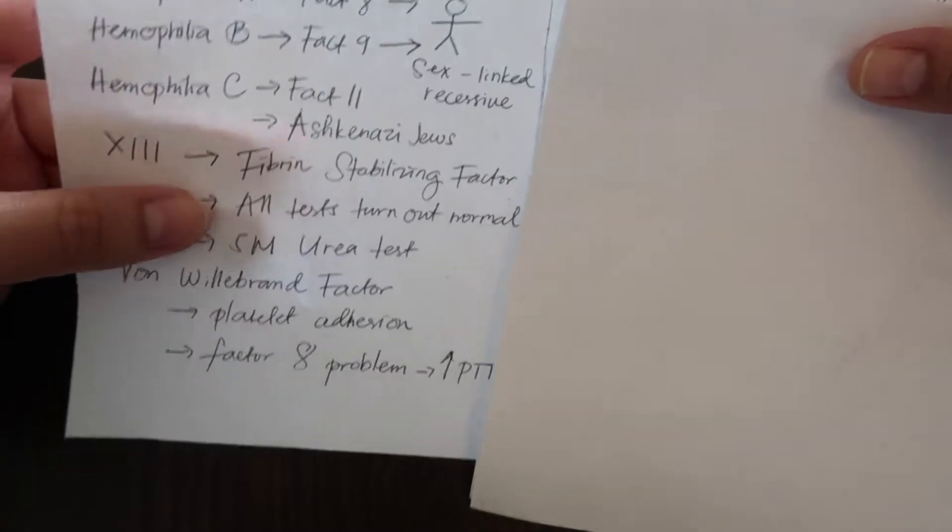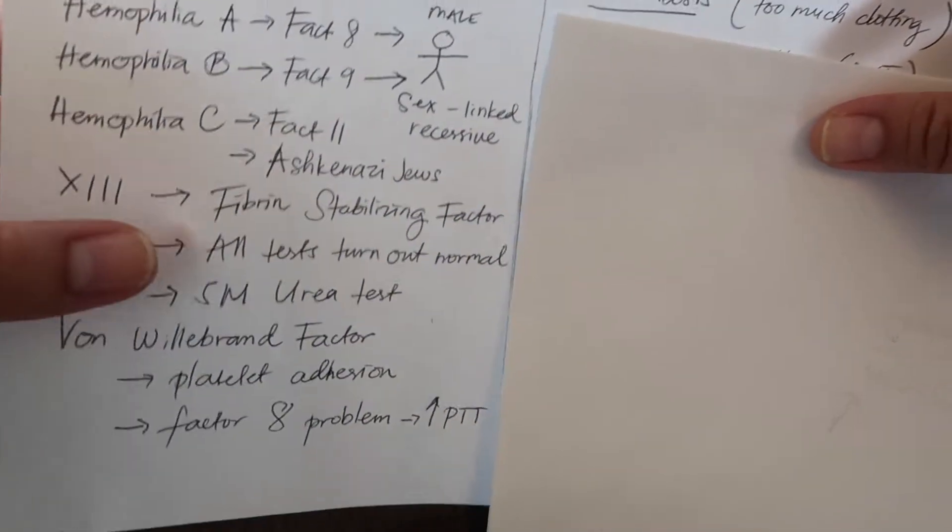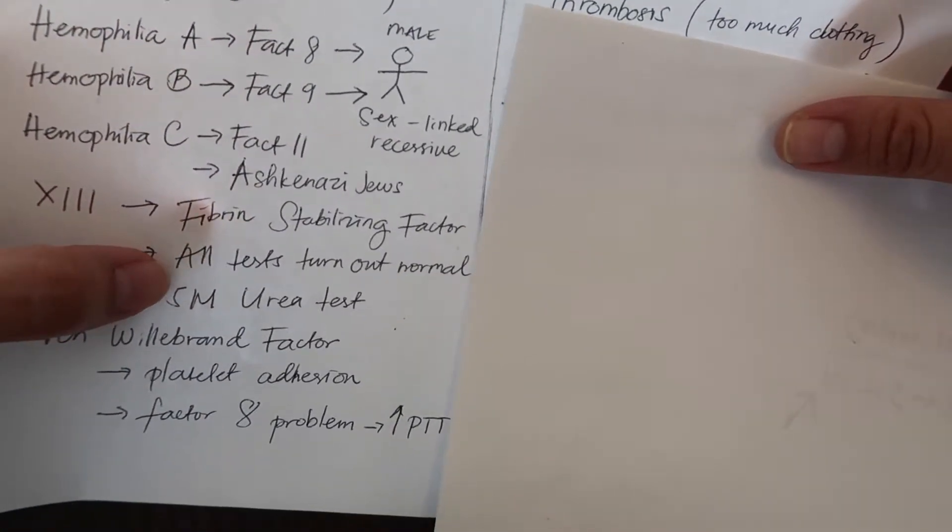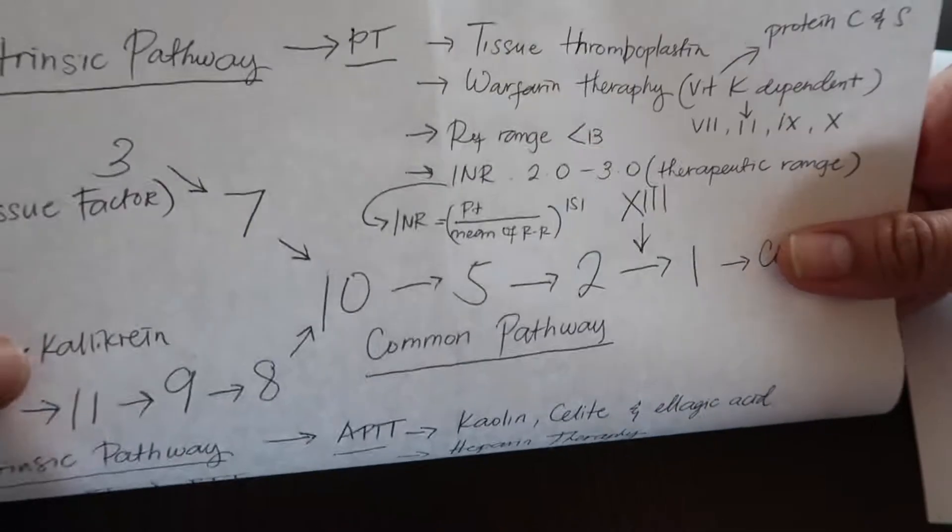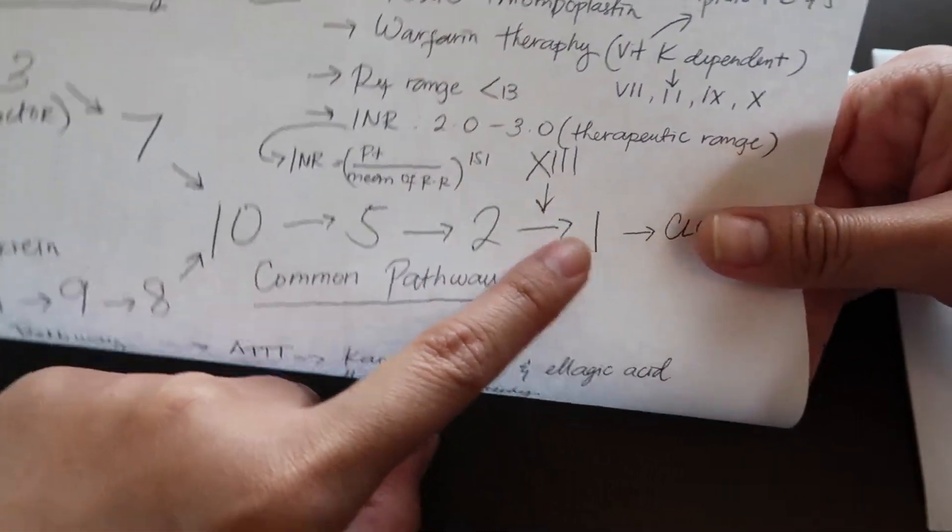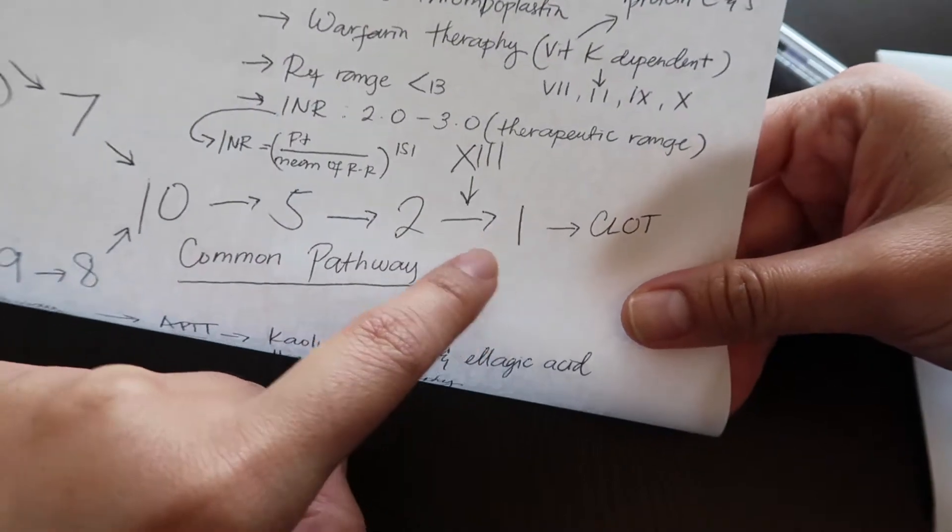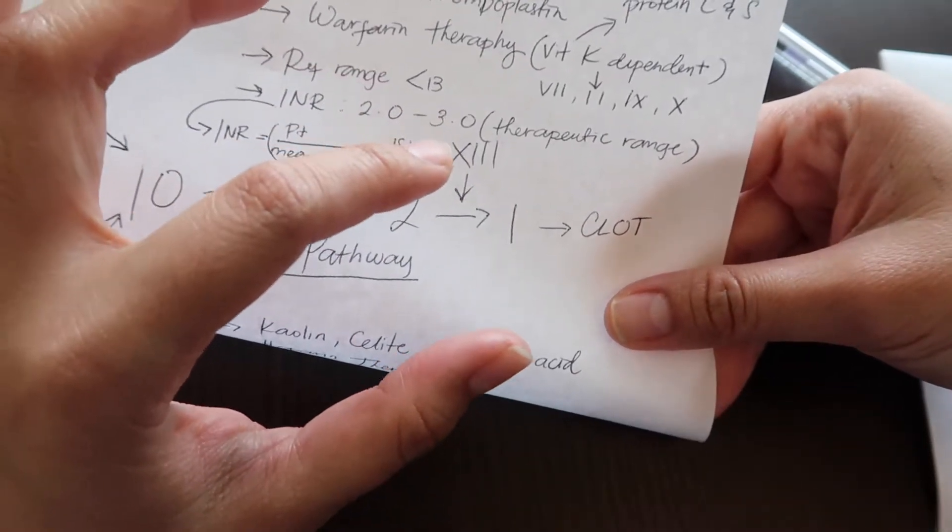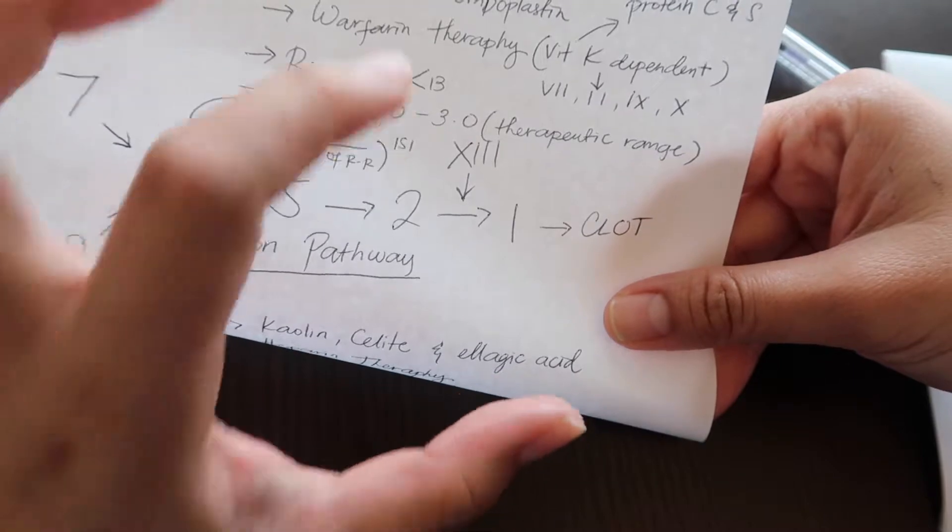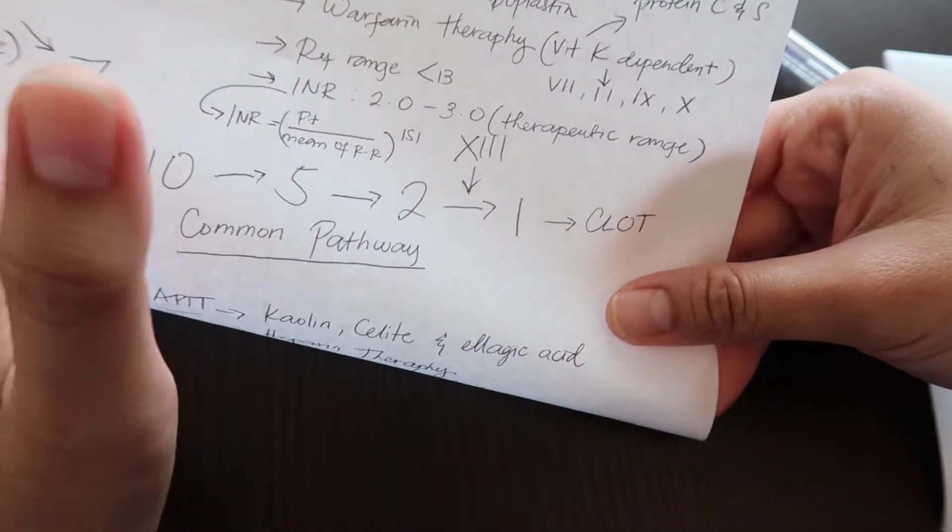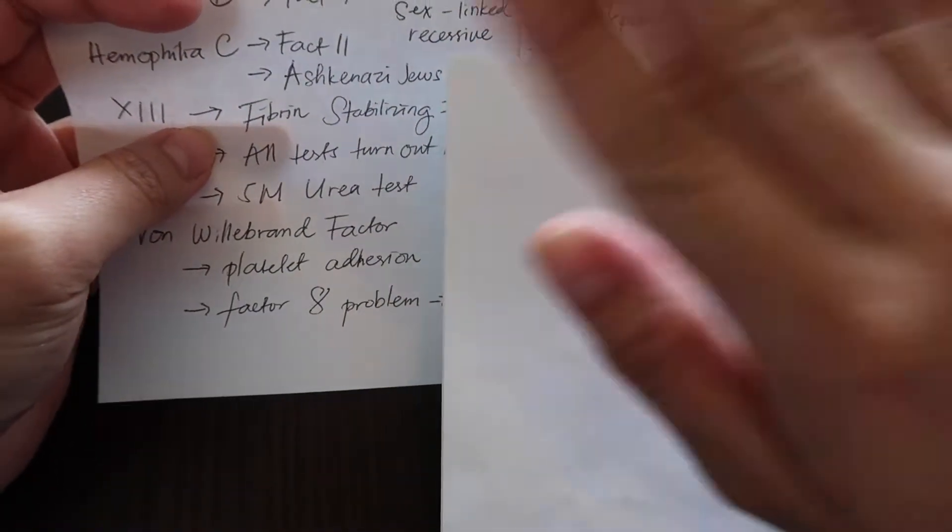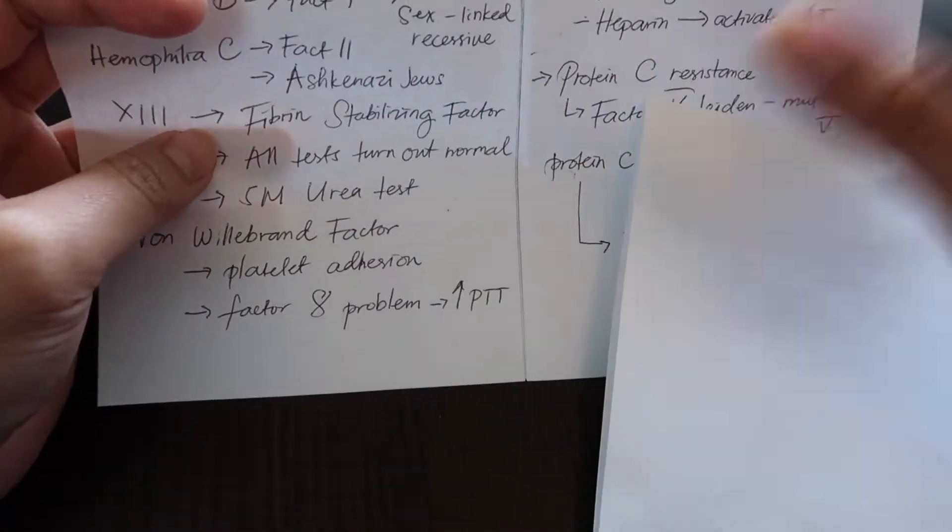We have an interesting one here too, which is factor 13. Factor 13 is the fibrin stabilizing factor. It's not part of the cascade per se. It's not there, but I place it here because at this point where you're already producing fibrin, it helps it get stabilized. It's not involved in producing fibrin but it's involved in making sure it doesn't come off. It's basically like cement; it stabilizes it and makes sure that it doesn't go anywhere.